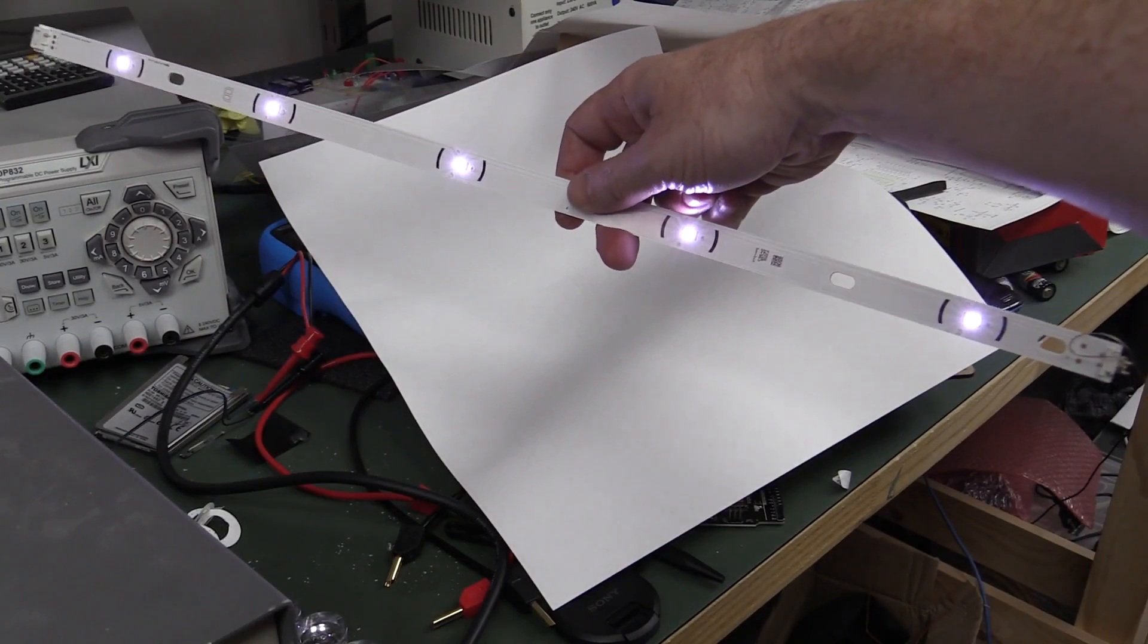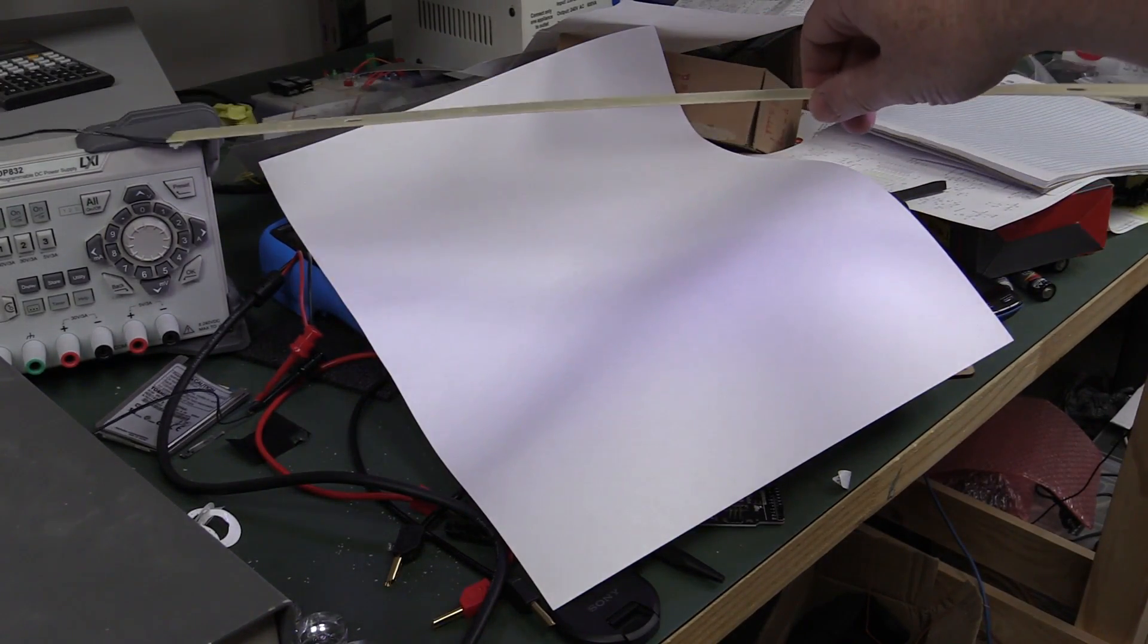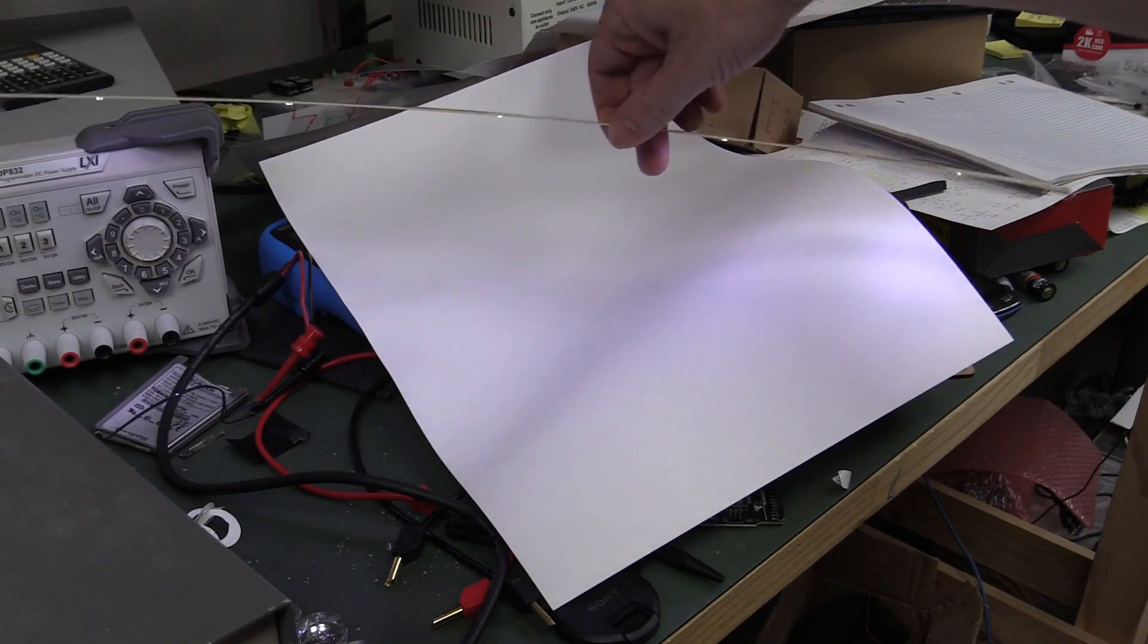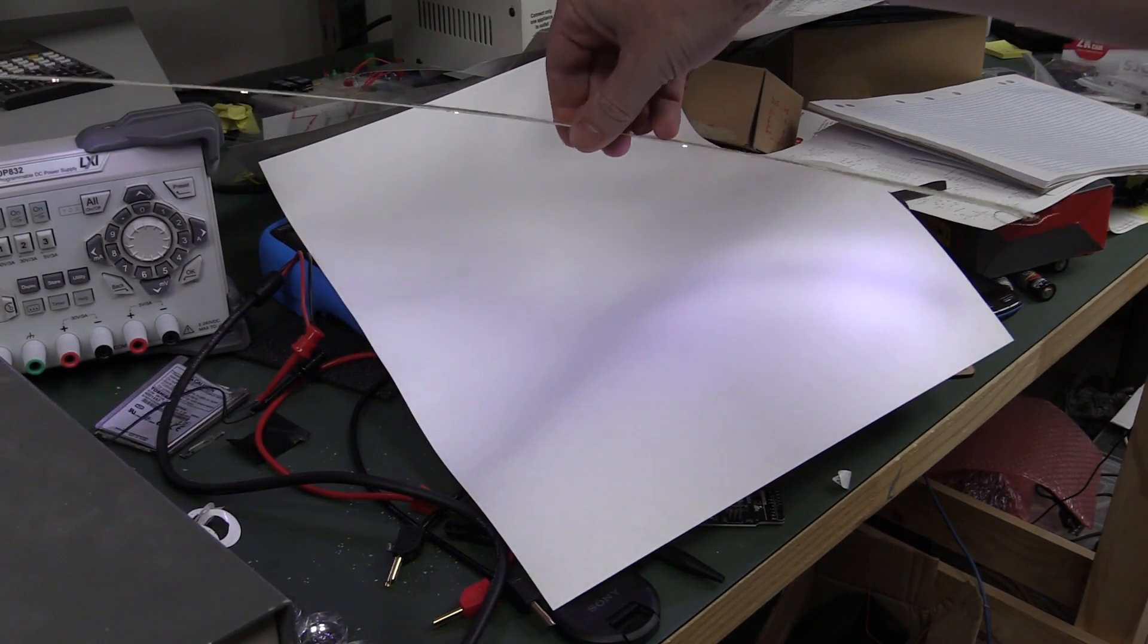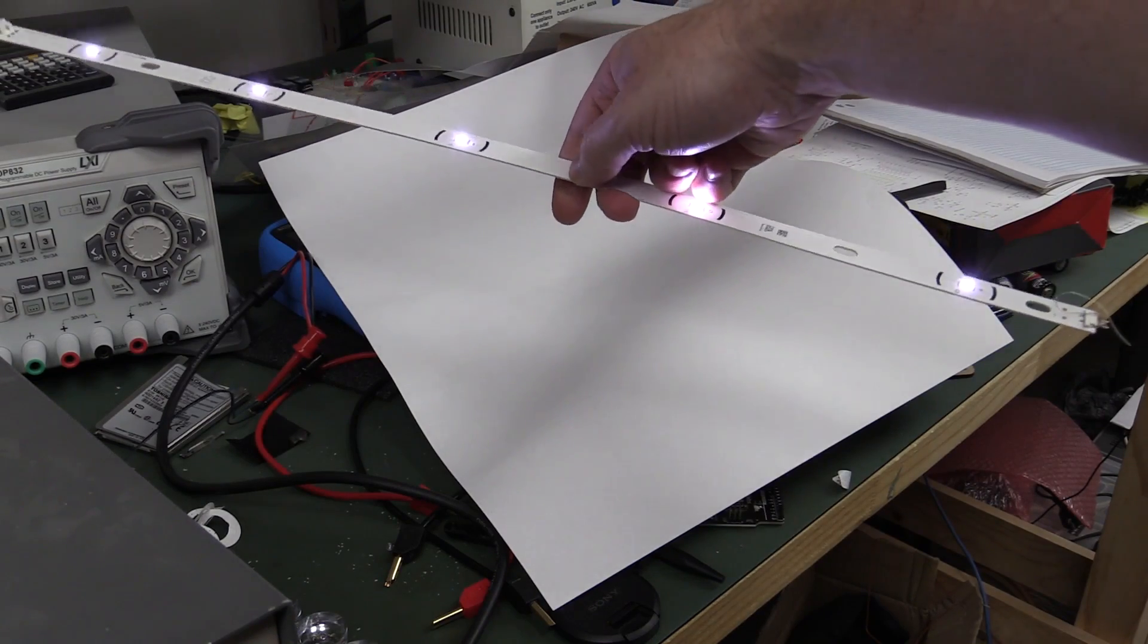And, there we go. They're actually fairly wide emitters, those ones. So, they could be really good for under-bench lighting. You can see a bit of a hotspot thing happening there up close, but take them a fair way back, and they're actually quite nice.